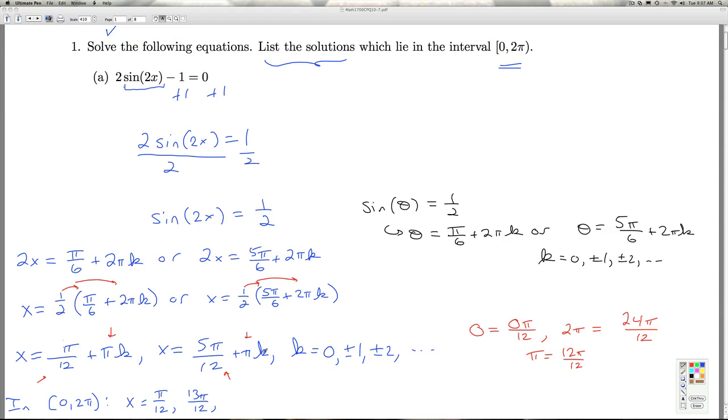I move to this family. I plug in k equals 0, I get 5π/12. I plug in k equals 1, I get 5π/12 plus 12π/12. That gives me 17π/12,